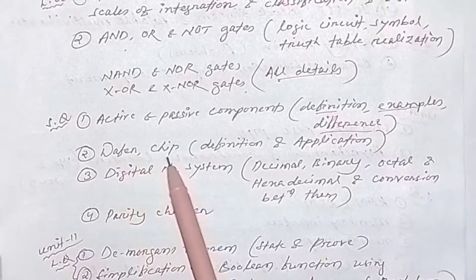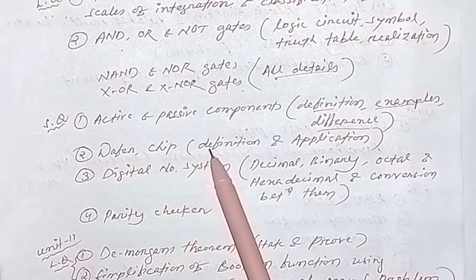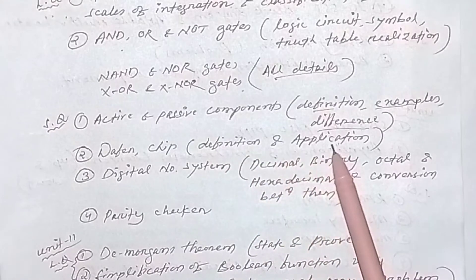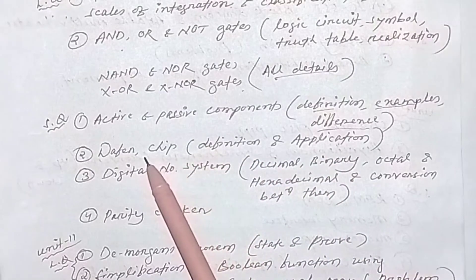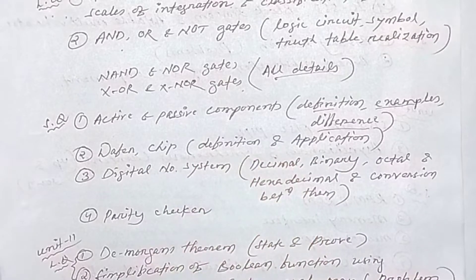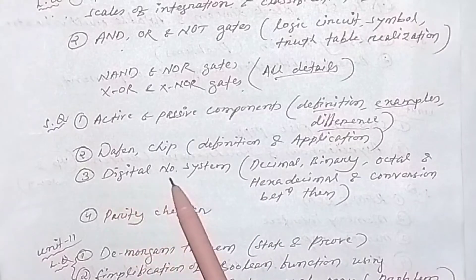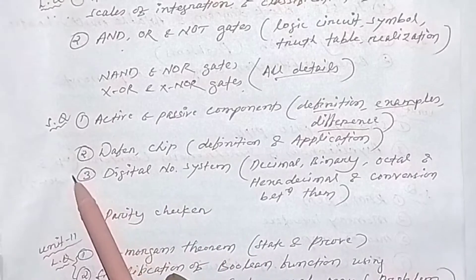Second short question topic: wafer and chip — from the first chapter, know the definitions and applications of wafer and chip. Next, digital number systems — this is very, very important.